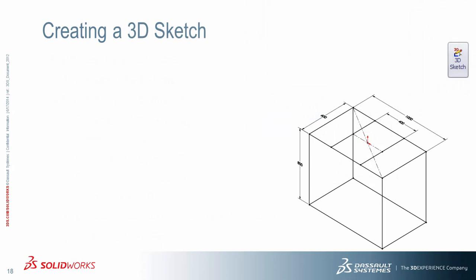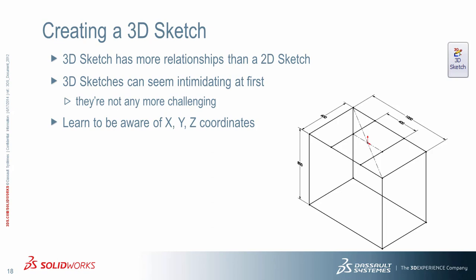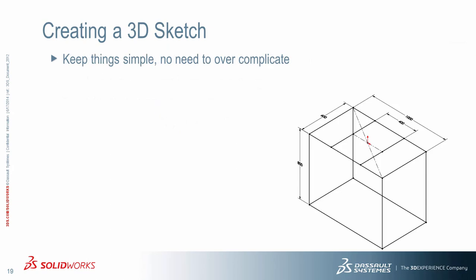Let's look at creating our weldment now. To do this, we want to create a 3D sketch. This tool is on the Command Manager tab for the weldment tools, as it's one of the most natural ways to create a frame. 3D sketches have a lot more relationships than the 2D environment. As we start incorporating the Z-axis in addition to X and Y, it can get a little confusing. 3D sketches can seem intimidating at first, but if you keep your eye on a few things, they're not really any more challenging. Keep things simple — if a 3D sketch is getting too complicated, break it up into multiple simple 3D sketches.